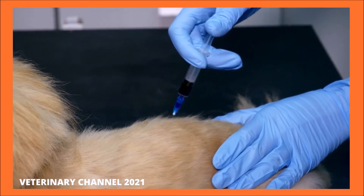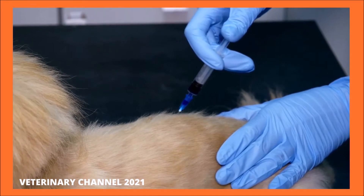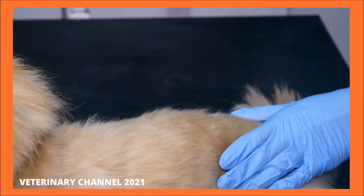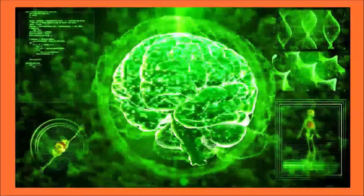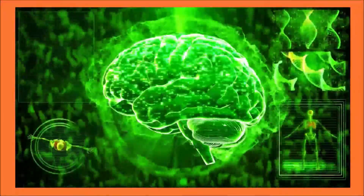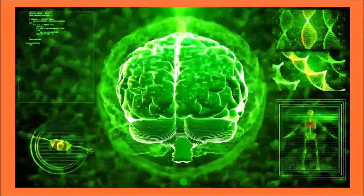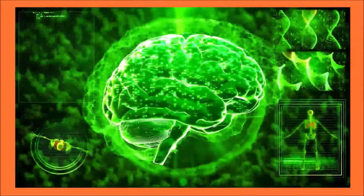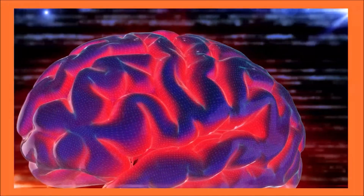Although rabies continues to be a danger to people around the world, rabies in the United States is controlled through vaccination of pets. The rabies virus causes acute encephalitis that can affect any mammal. The virus causes sudden and progressive brain and spinal cord inflammation.